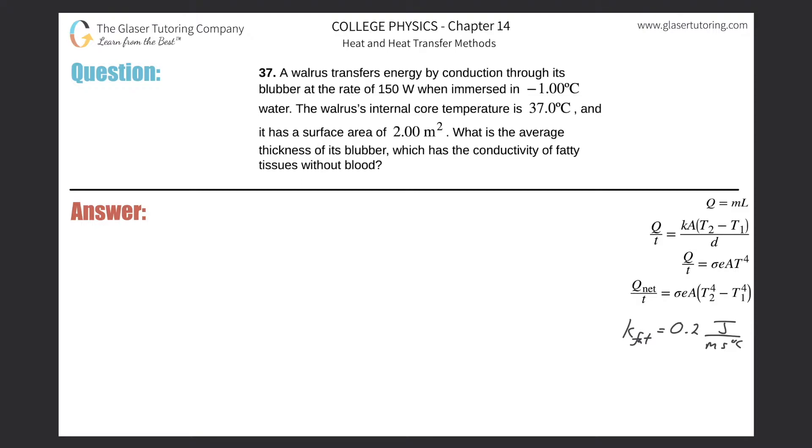Number 37. A walrus transfers energy by conduction through its blubber at a rate of 150 watts when immersed in negative 1 degree Celsius water. The walrus internal core temperature is 37 degrees Celsius and it has a surface area of 2 meters squared. What is the average thickness of its blubber which has the conductivity of fatty tissues without blood?